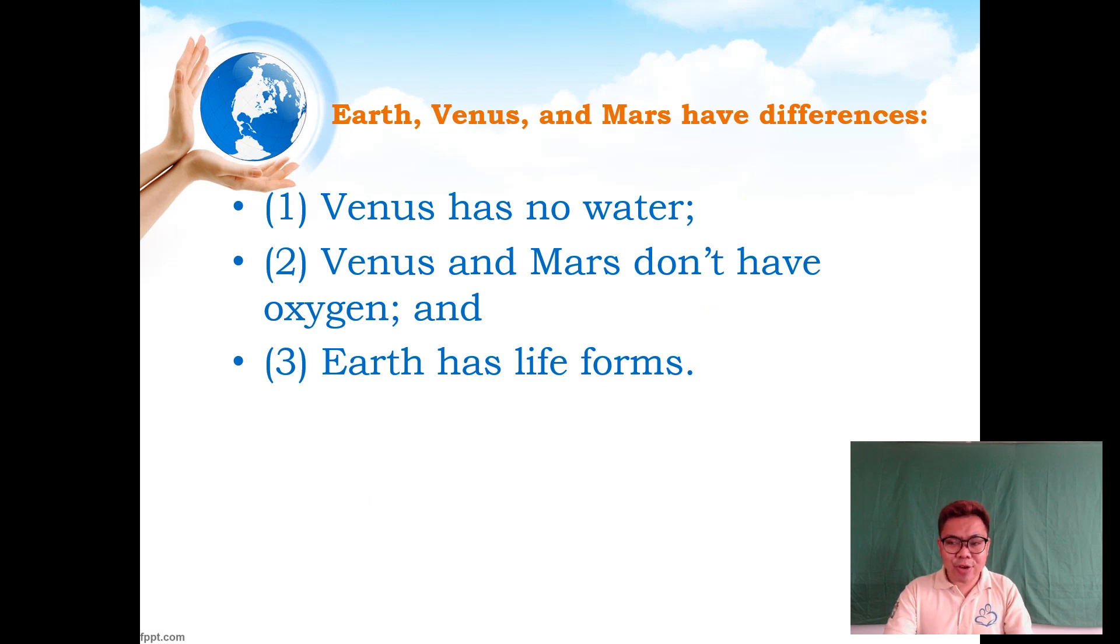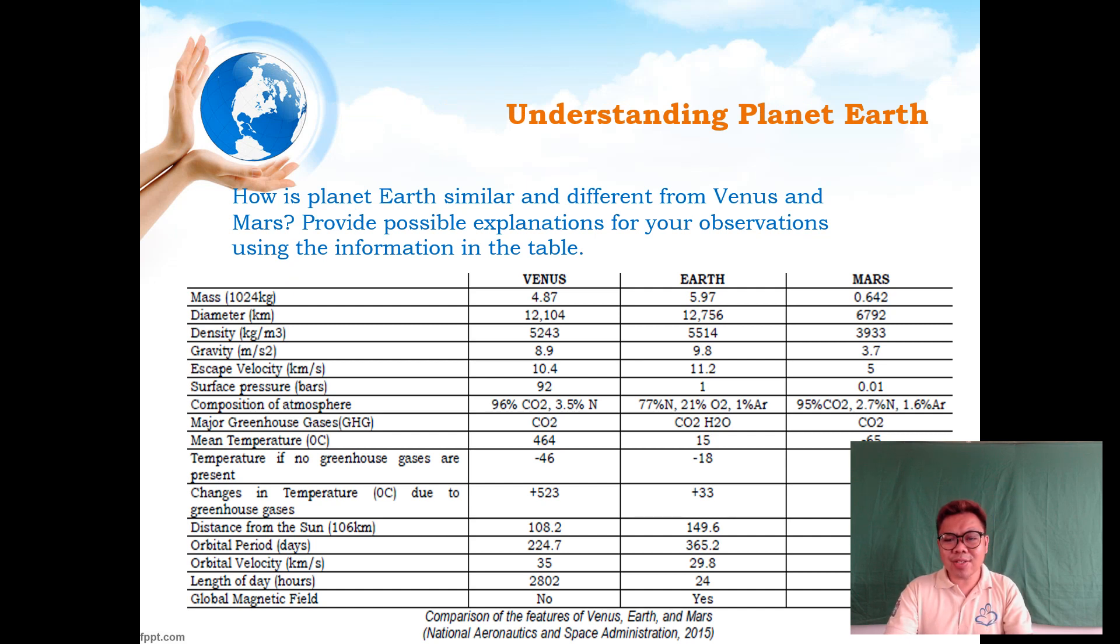But on the other hand, they also have differences. Earth, Venus, and Mars differences are the following: Venus has no water unlike Earth and Mars. Number two, Venus and Mars don't have oxygen. And Earth has life forms.